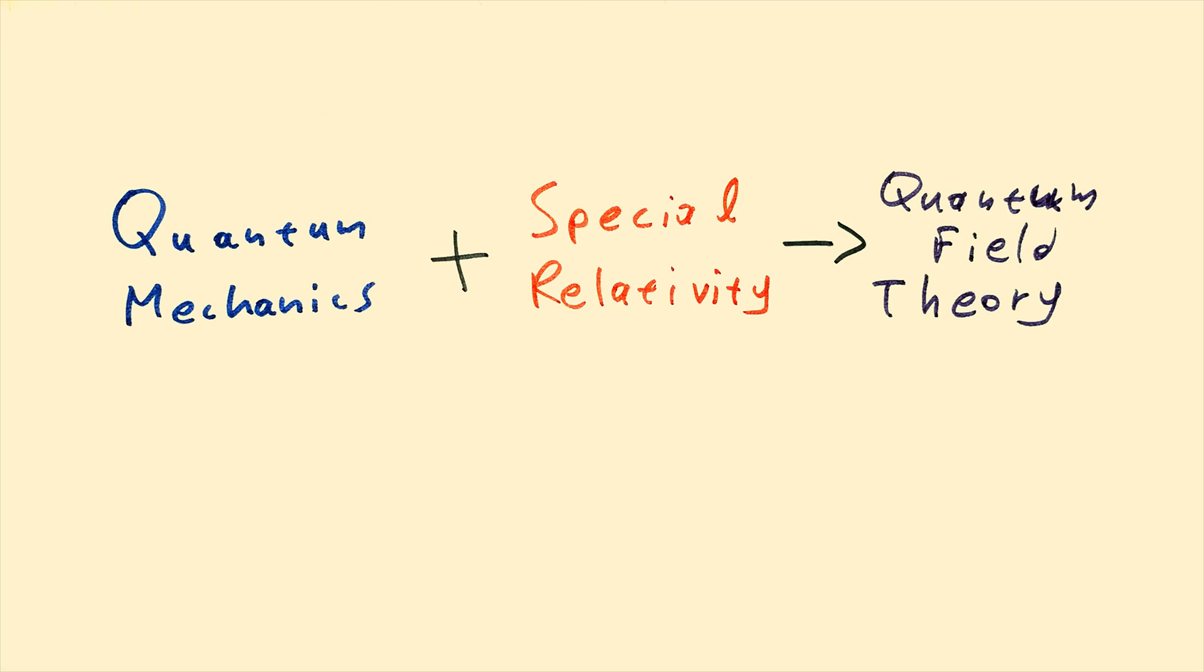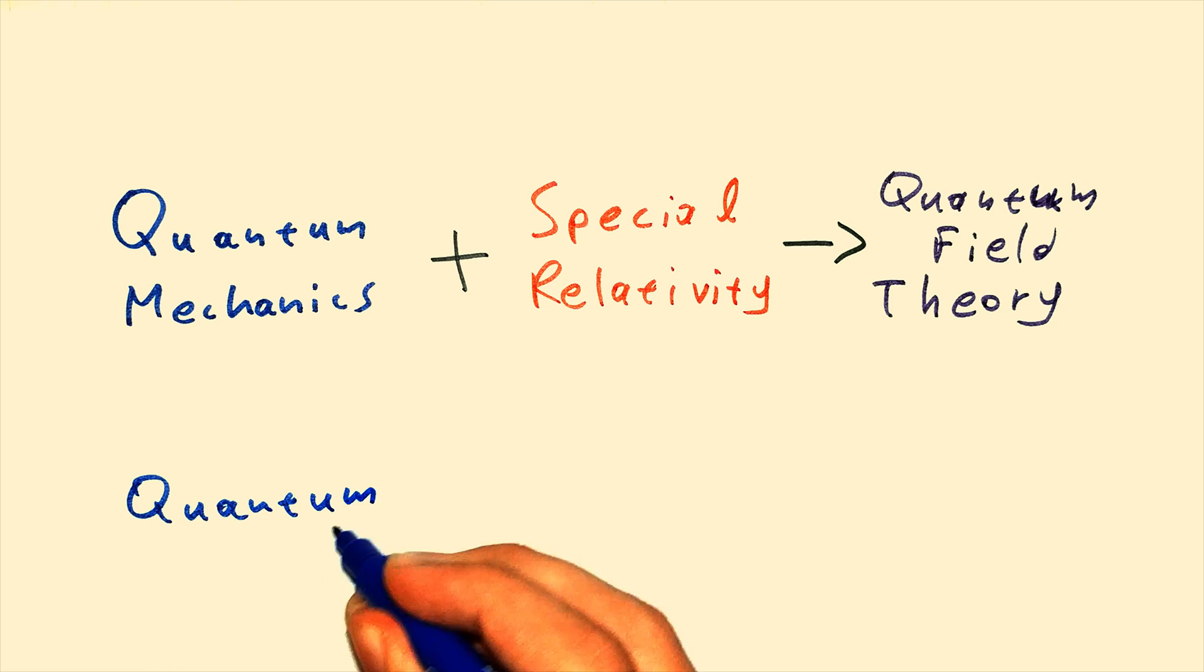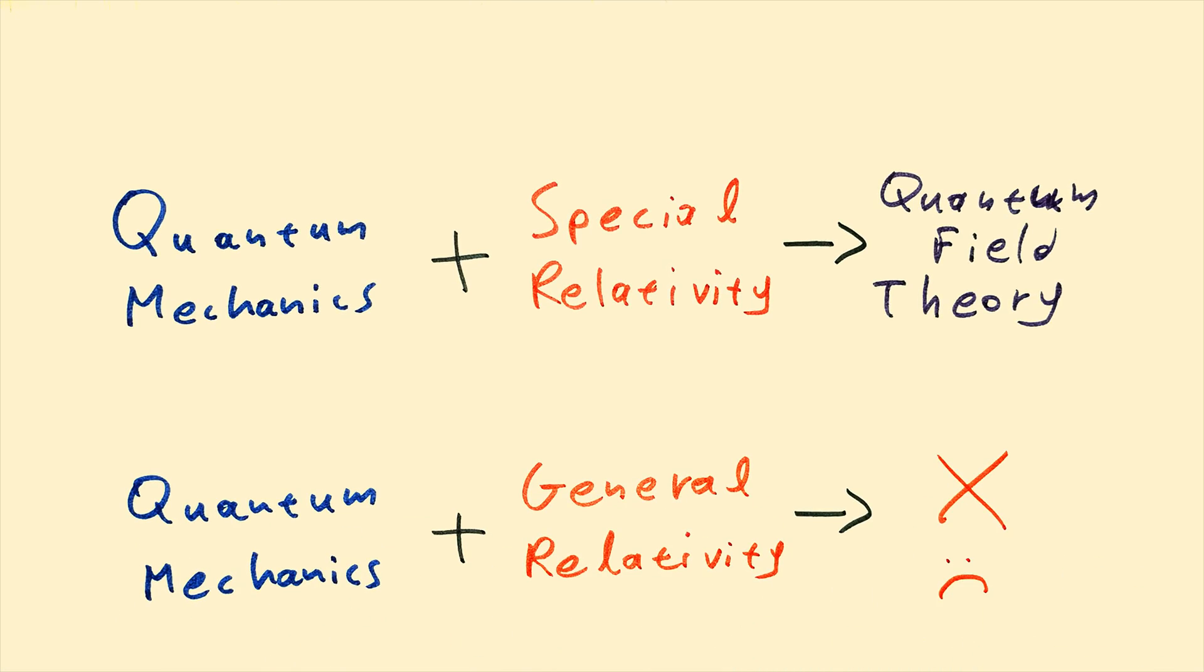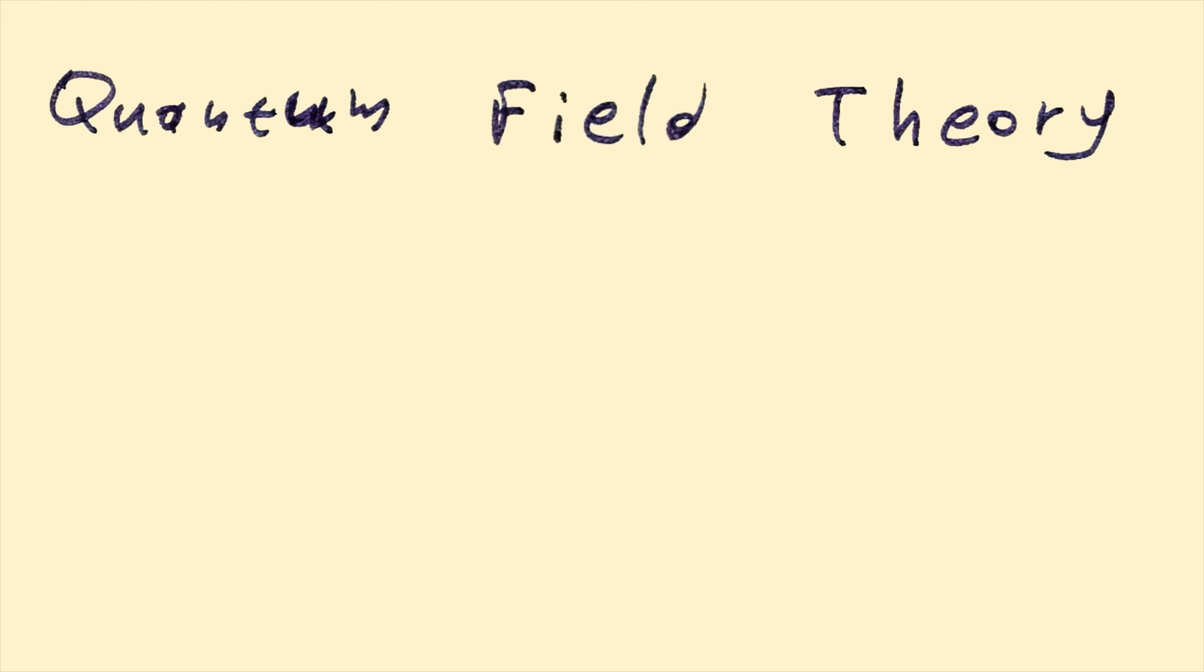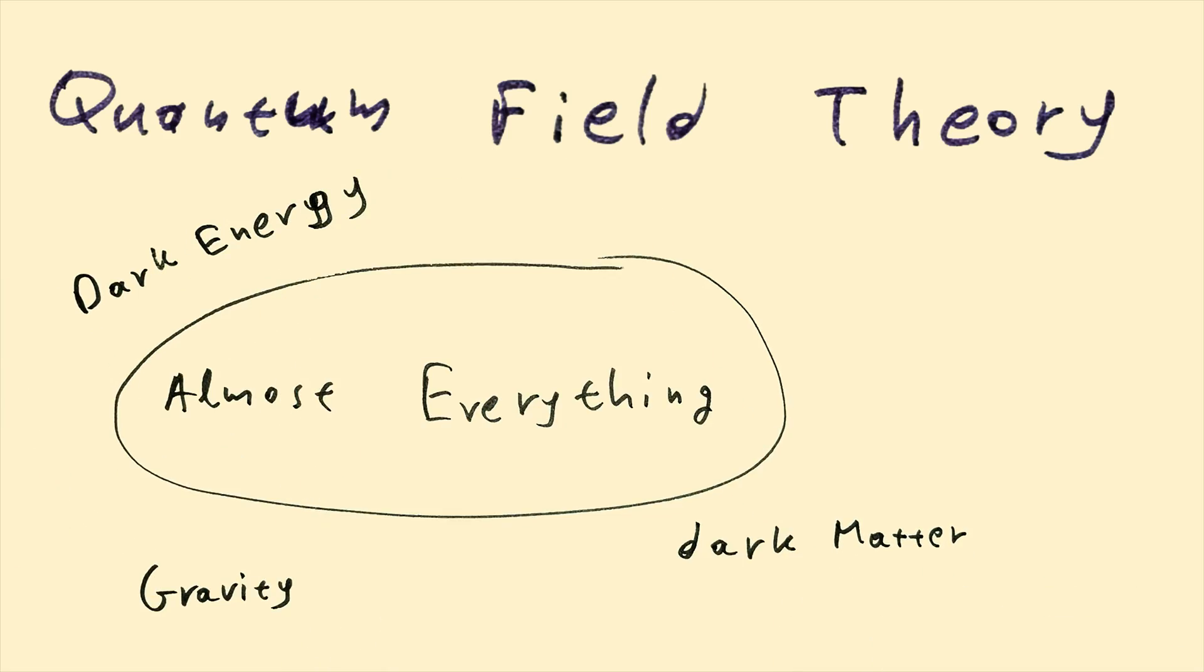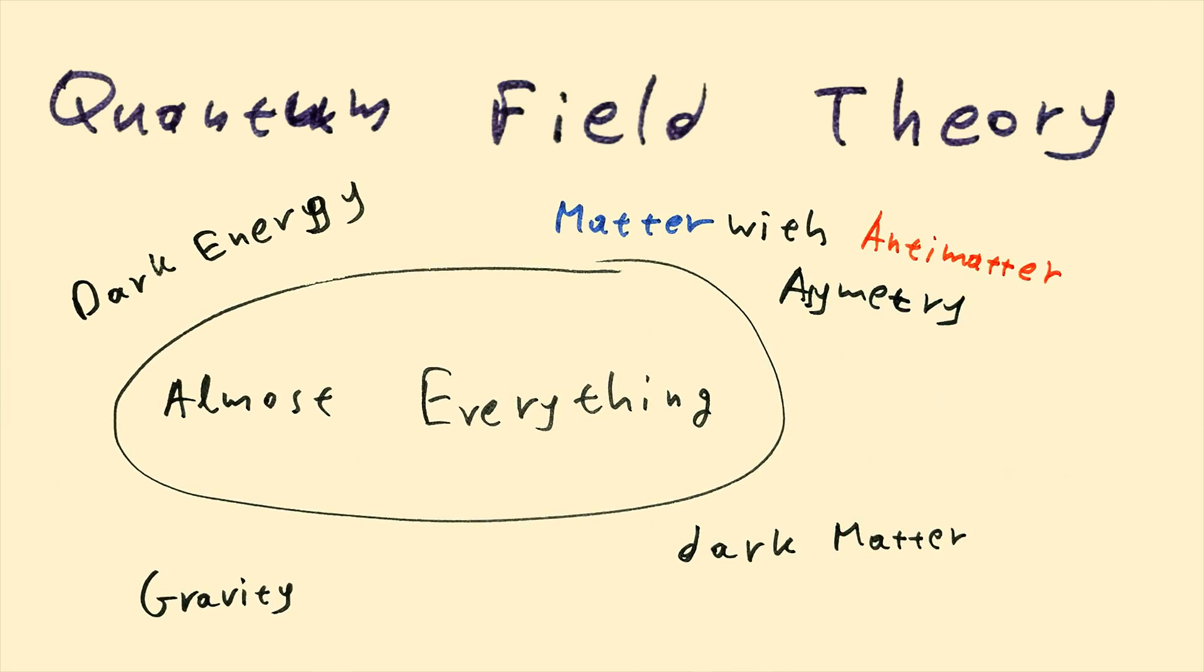Despite our efforts, we didn't and we still haven't merged quantum field theory with general relativity. So when I said quantum field theory can explain everything, well, I meant almost everything. It still lacks features like gravity due to the incompatibility with general relativity, dark matter, dark energy, matter-antimatter asymmetry, and neutrino oscillations. And this is where today's research is focused on. So keep learning physics and you may contribute to this task.